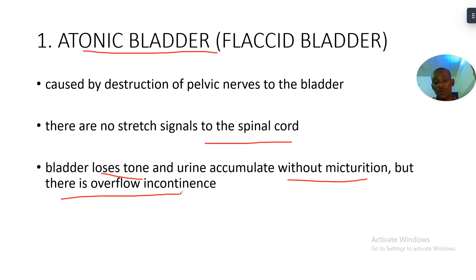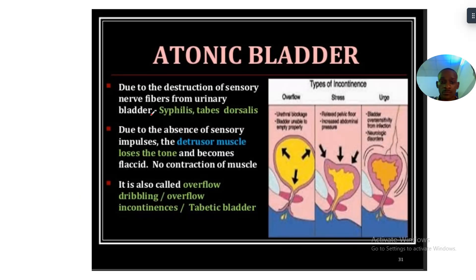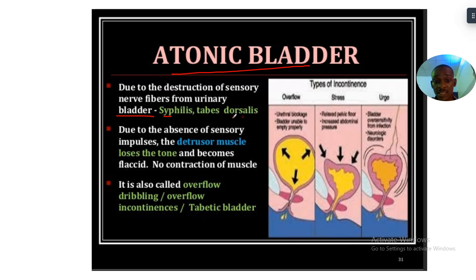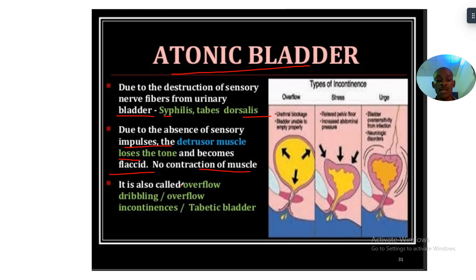This results in overflow incontinence — your bladder loses tone and urine accumulates without micturition reflex. This is a picture of the atonic bladder. It is due to destruction of the sensory nerve fibers from the urinary bladder. Examples include syphilis and tabes dorsalis. The absence of sensory impulses causes the detrusor muscle to lose tone and become flaccid, with no muscle contraction. This is also called overflow dribbling.